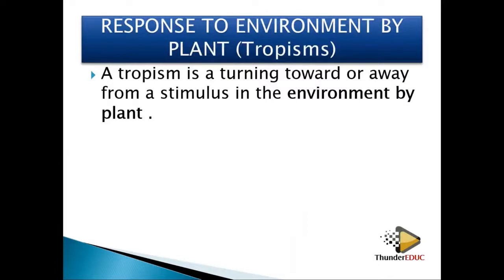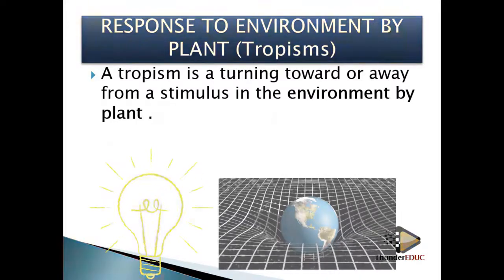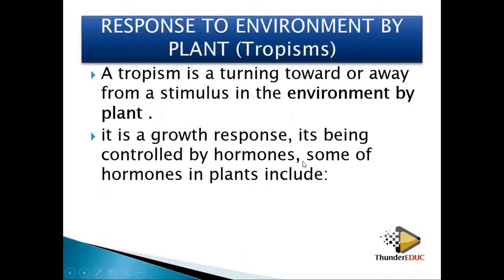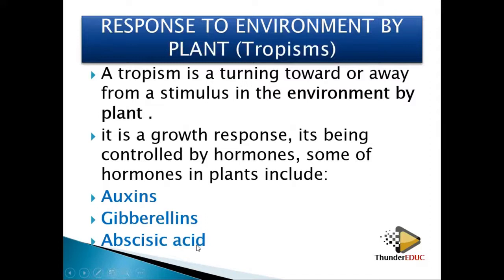In the case of plants, we are going to be looking at two kinds of stimuli: light and gravity. However, there are many stimuli that can be used. Tropism is controlled by hormones. Some of the hormones in plants include: number one, auxins; number two, gibberellins; and number three, abscisic acid. We will look at the effect of each hormone on plants.